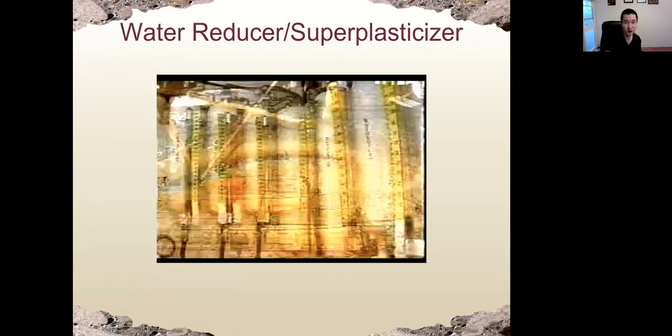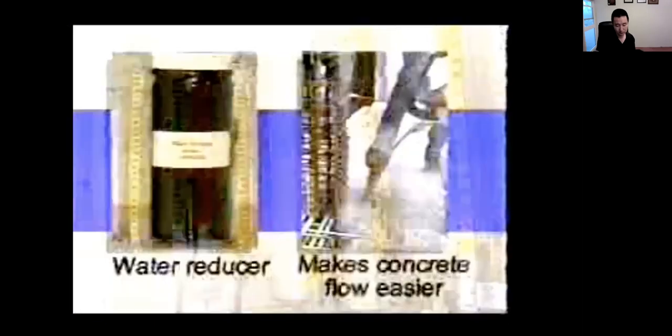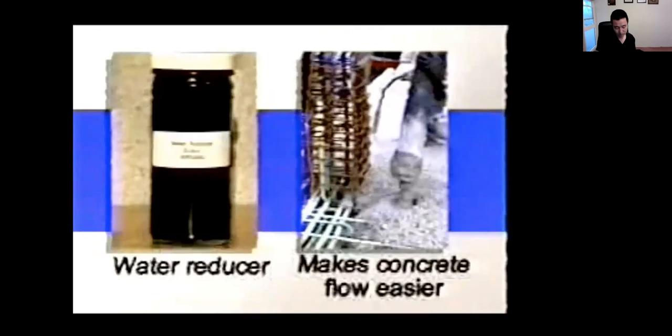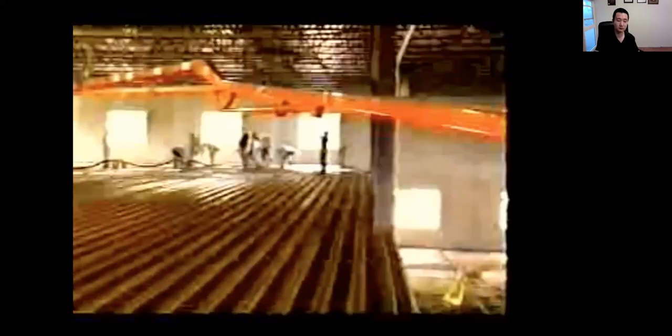The next chemical admixture is water reducer — sometimes we call that a superplasticizer. Chemical admixtures give concrete properties it normally wouldn't have. To make a mix more fluid, a water reducer can help. Water reducers make the concrete flow more easily — for example, from a pump through a hose to an elevated slab in a warehouse — without increasing the water content. If a water reducer is not used, pump hoses can become clogged and blocked, delaying placement. Water reducers are also used for concrete in areas that are difficult to place, such as around congested reinforcing steel.